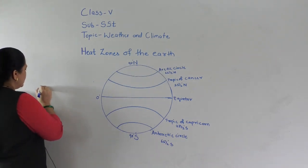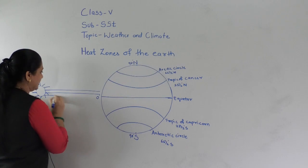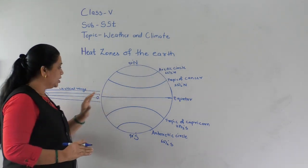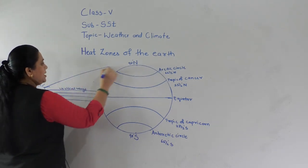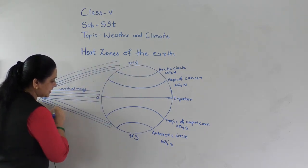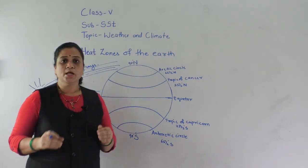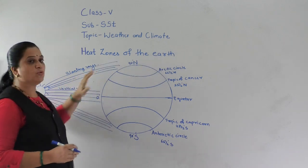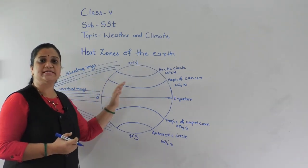The sun rays fall vertically at the equator, so the places near the equator are very hot. As we move away from the equator towards the poles, the sun rays become slanting. The places near the equator are hotter than the places away from the equator because of the angle of the sun rays — the amount of heat received from the sun differs at different latitudes.